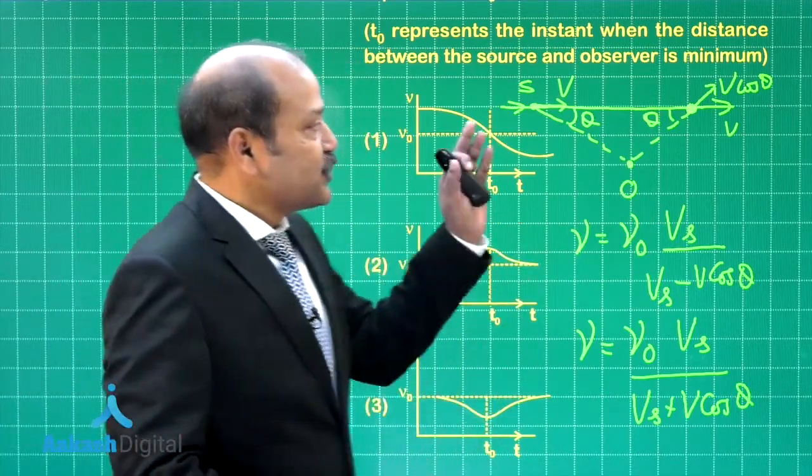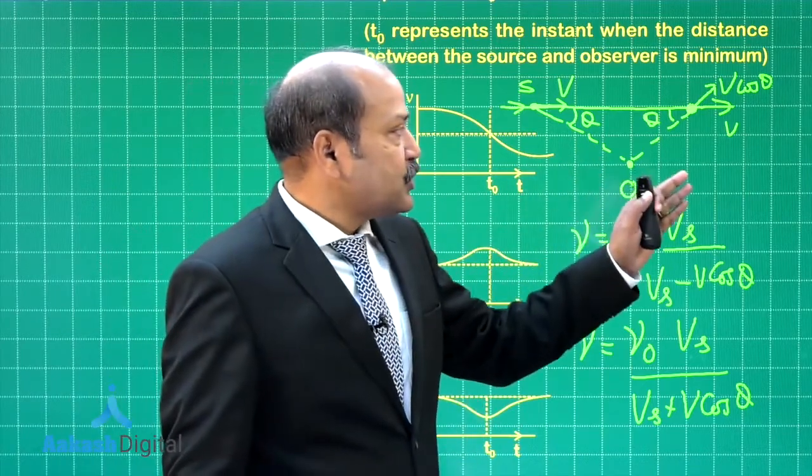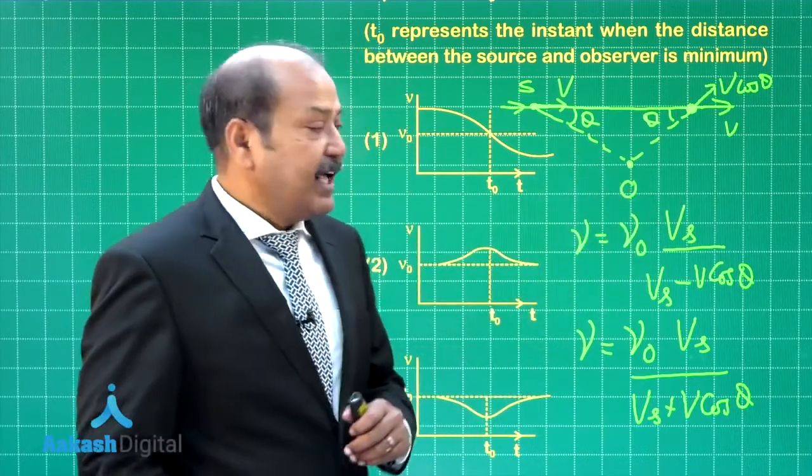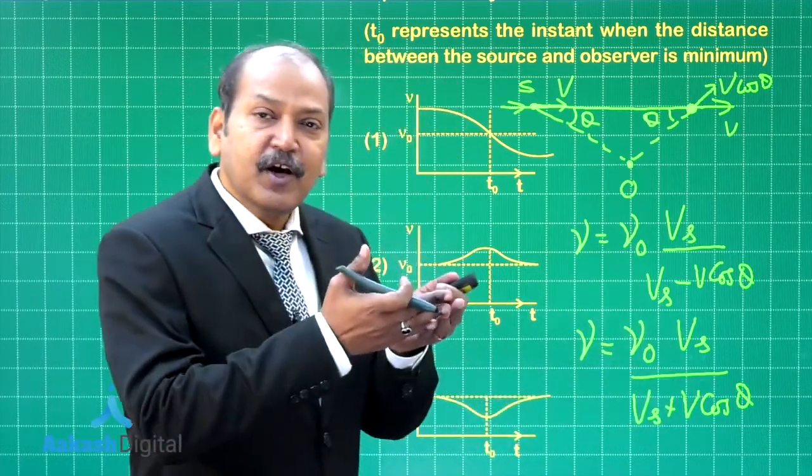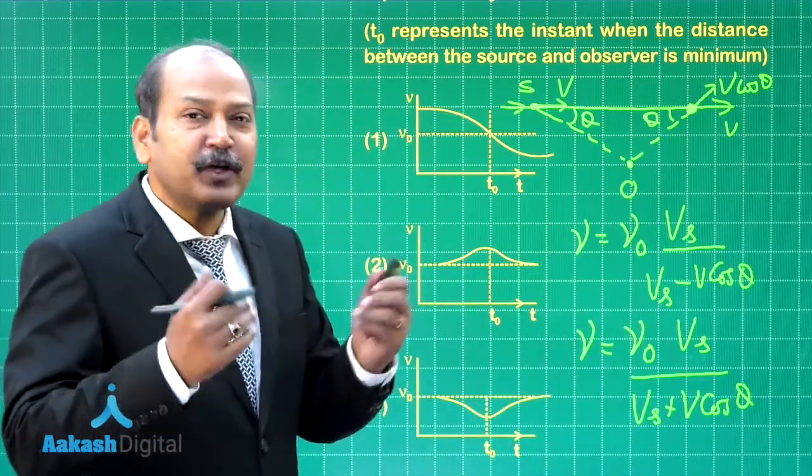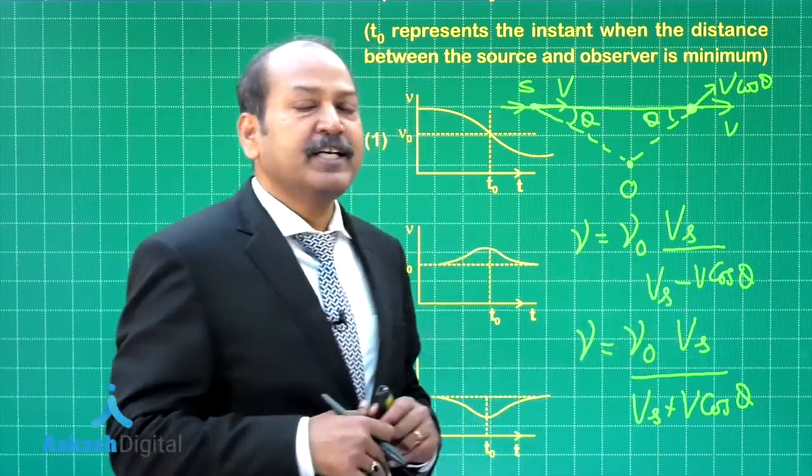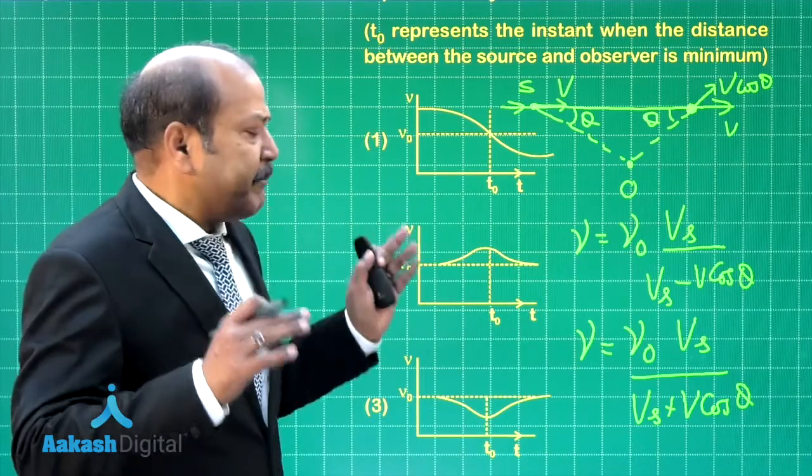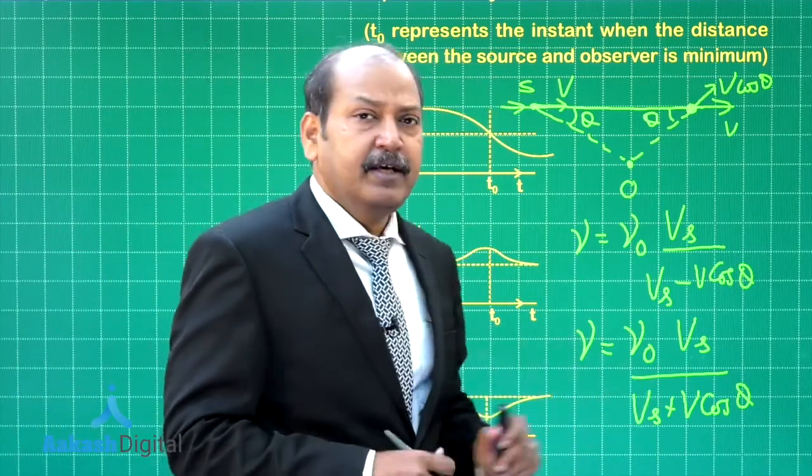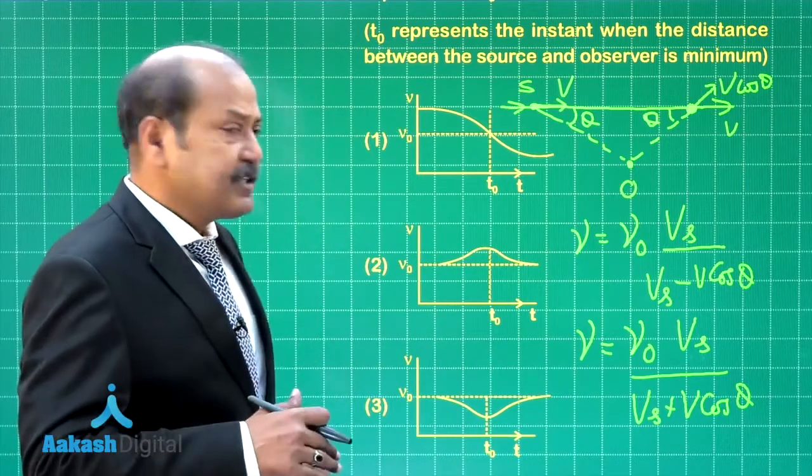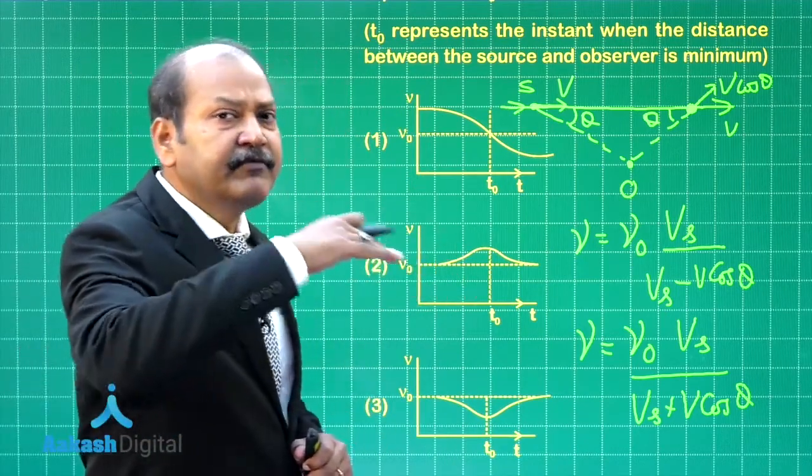As the source is going further and further angle theta goes on decreasing and as angle theta goes on decreasing the denominator goes on increasing. So the frequency of course goes on decreasing. The maximum value of the denominator will be V s plus V and so that means it goes on decreasing but it approaches a certain value.